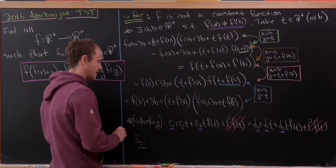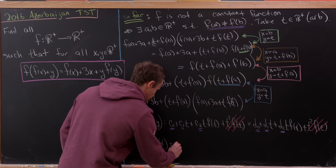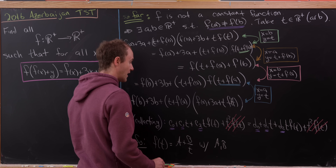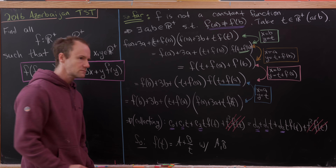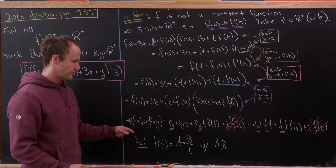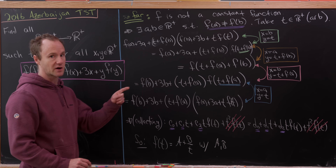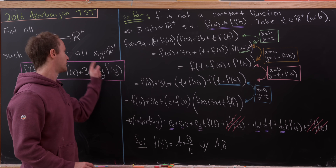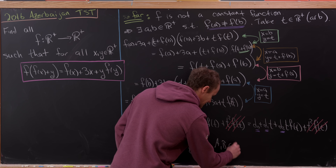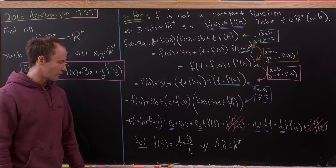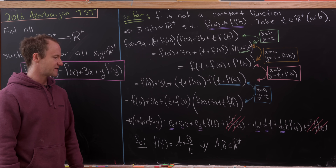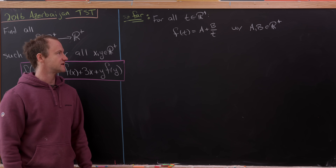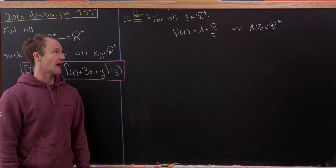Since those coefficients differ, we can solve for f(t) and none of the coefficients involved will be zero. So f(t) = a + b/t, where both a and b are non-zero. Moreover, since our function maps positive reals to positive reals, a and b must themselves be positive real numbers. So if the function exists, it must have this form.